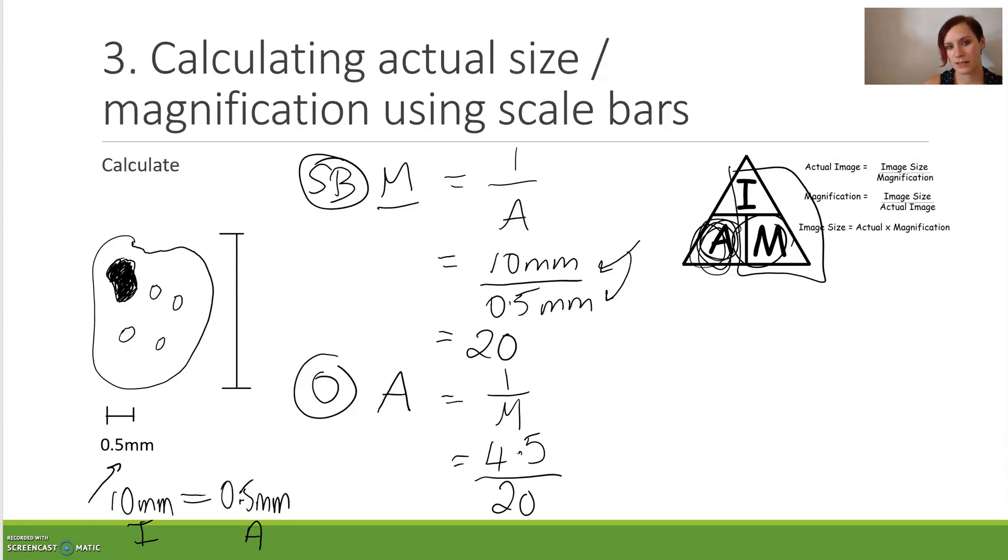Let's actually change this. Let's say we don't want 4.5 centimeters. We want 45 millimeters, because that's probably a better thing to be measuring our object in. 45 divided by 20 is going to give us 2.25 millimeters, which seems like an accurate type of thing to be needing to use a microscope to look at.